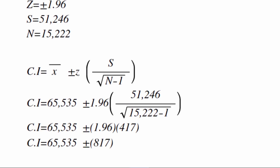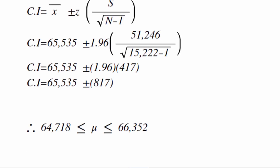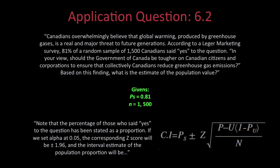Step 5: Therefore, the population mean is greater than or equal to $64,718 and less than or equal to $66,352.